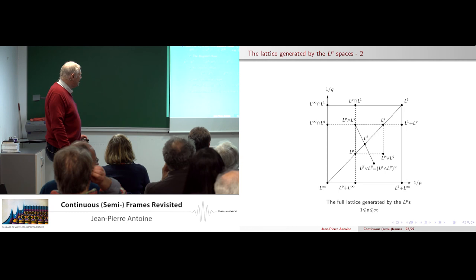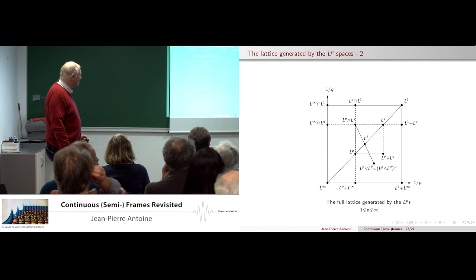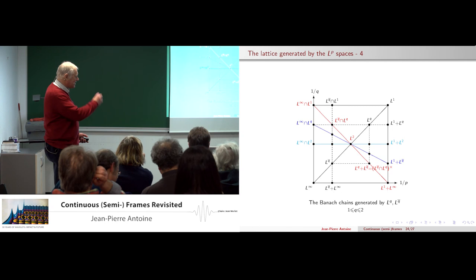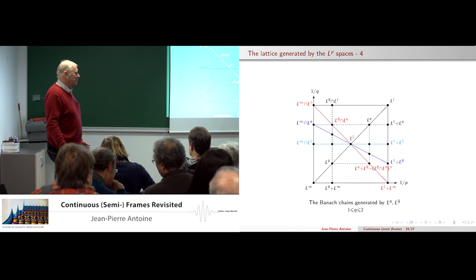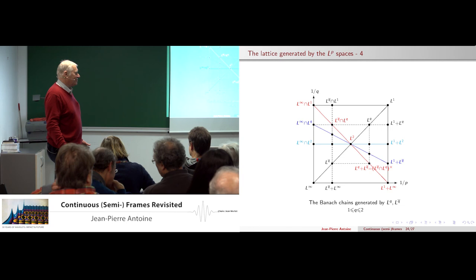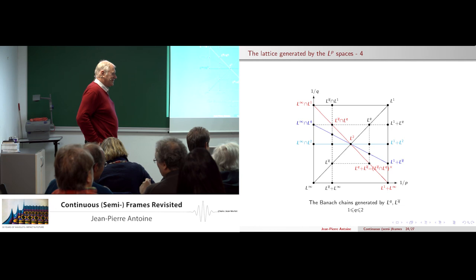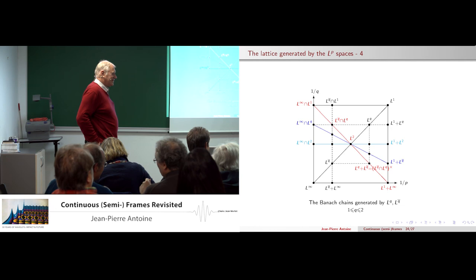From the whole big lattice, you extract scales of Banach spaces — reflexive if you avoid the endpoints, not reflexive if you include the endpoints. The diagram looks very much like amalgam spaces, where you take local LP-norm and global LQ-norm and also have a largest and smallest space. The diagram is the same, except the spaces are different.